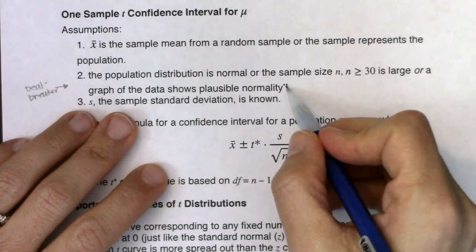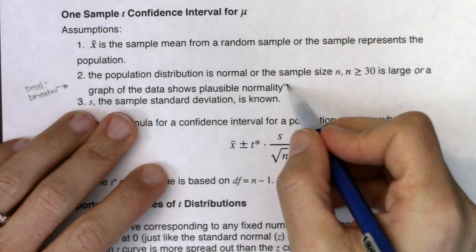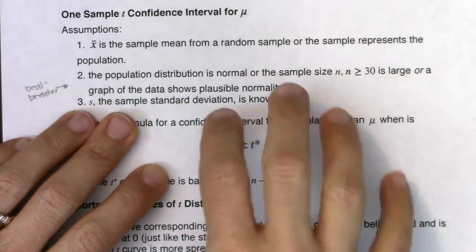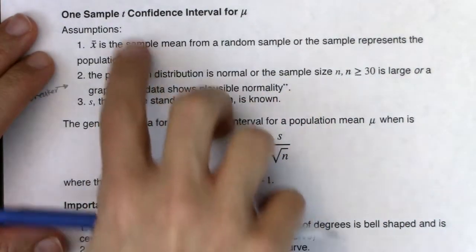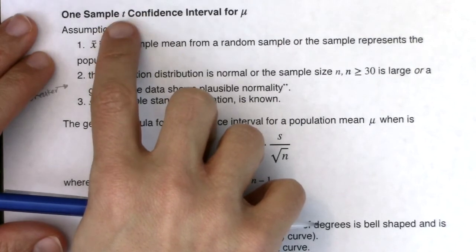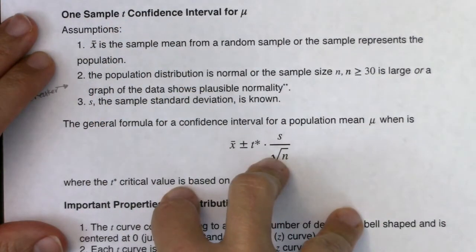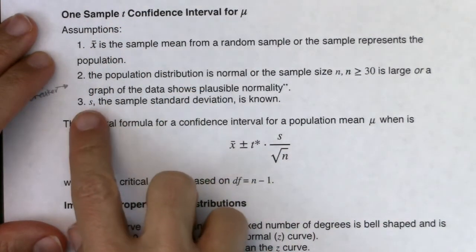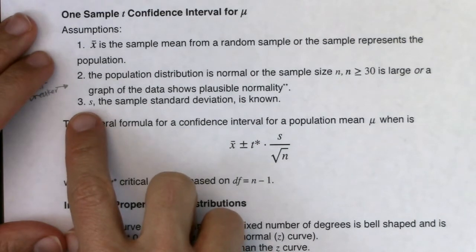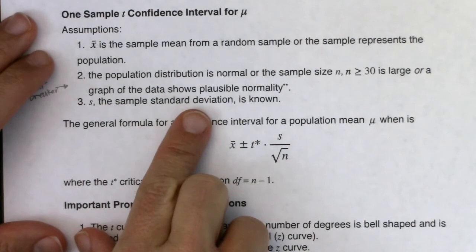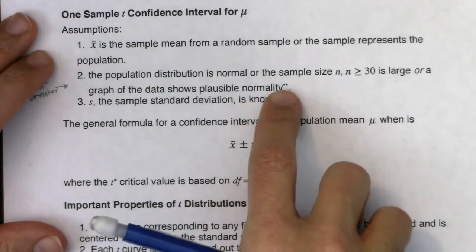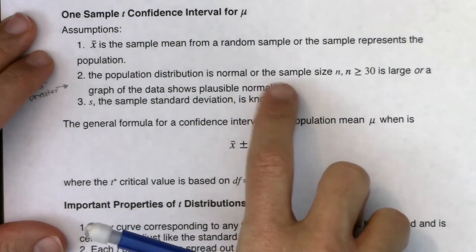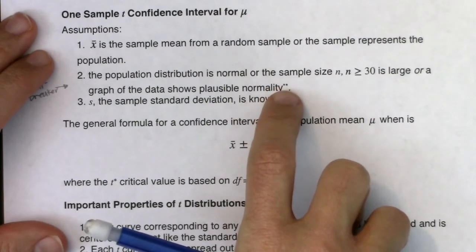There's a double asterisk here that I'll circle back to. I want to talk about this graph in relation to why we're doing a t confidence interval and not a z confidence interval. The third assumption might sound silly, but I need you to tell me what the sample standard deviation is. I'll talk about why this third assumption is here once we address this double asterisk.